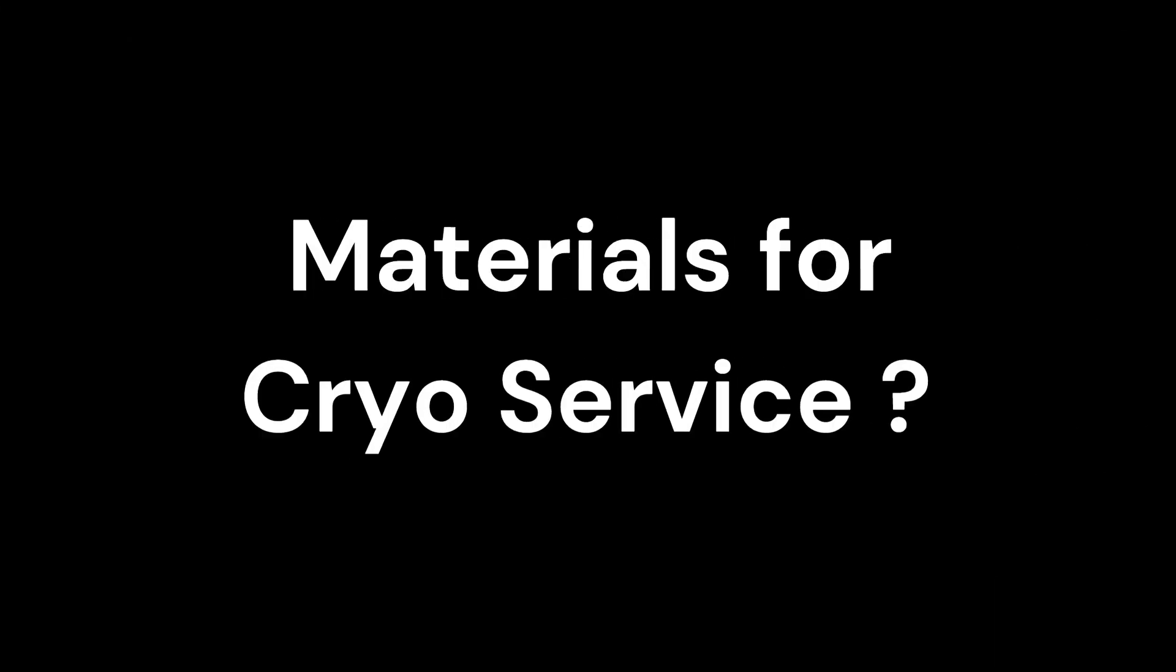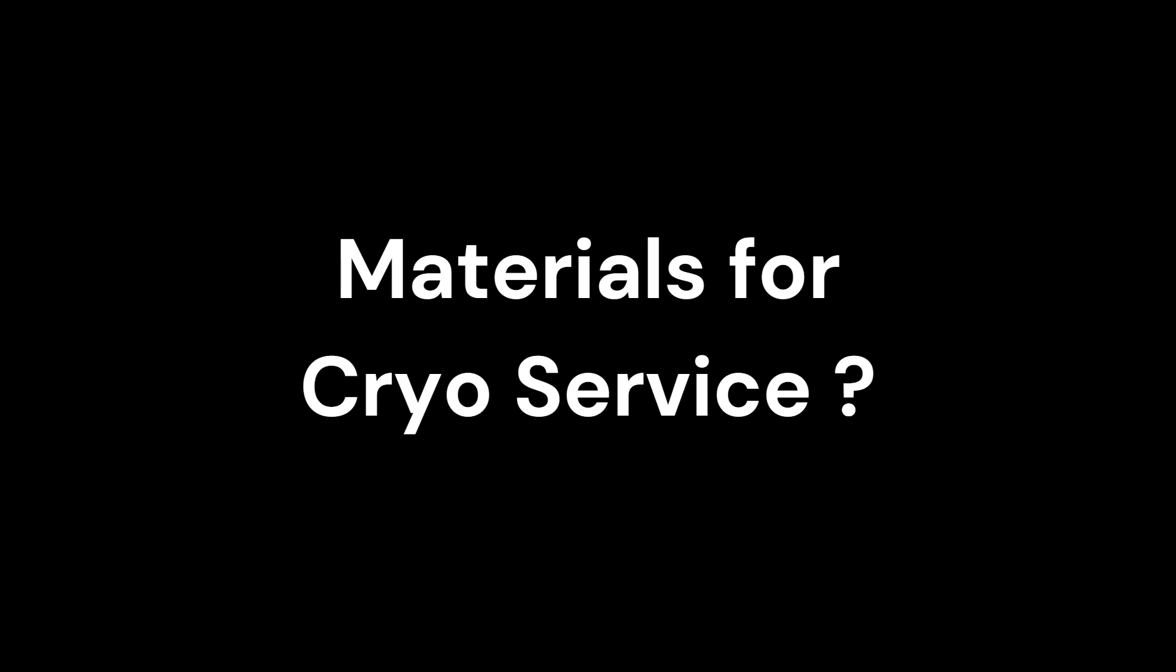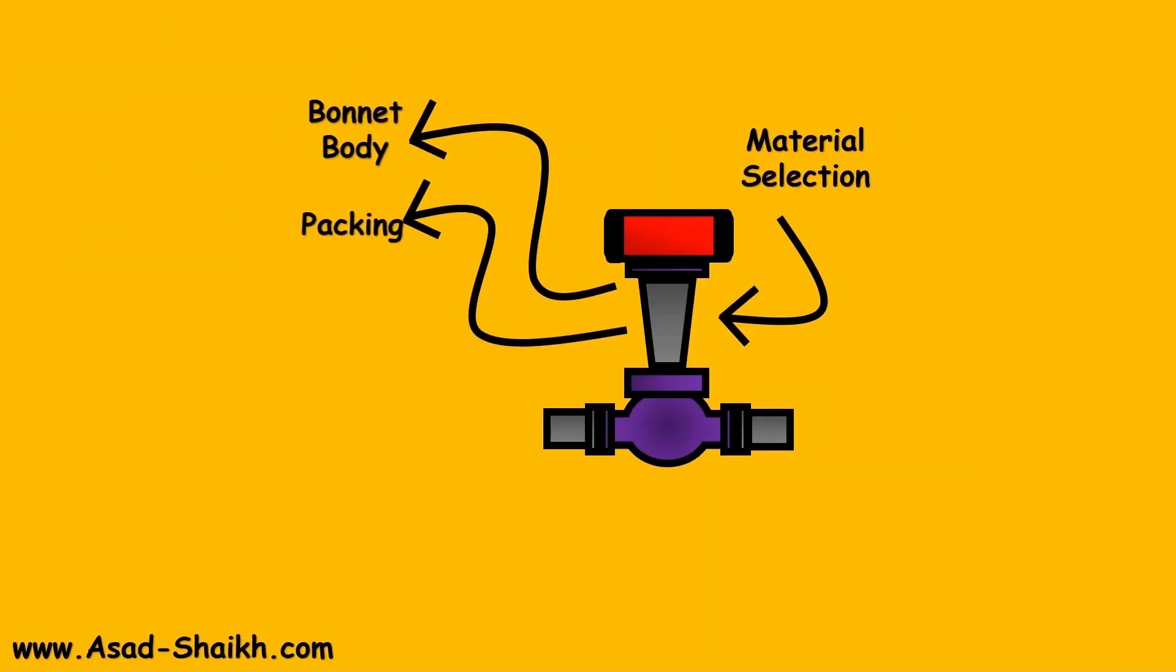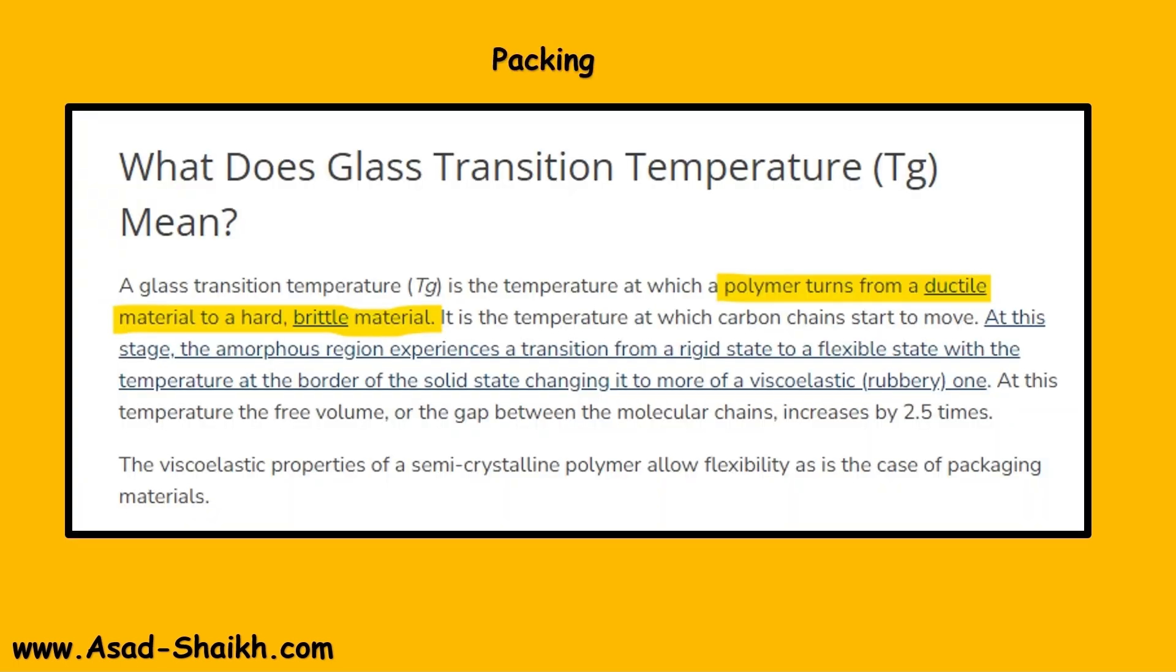Cryogenic service: two important things for material selection are the body and the packing. What happens is at cold temperatures there is something called glass transition temperature. That means a polymer turns from a ductile material to a hard and brittle material.